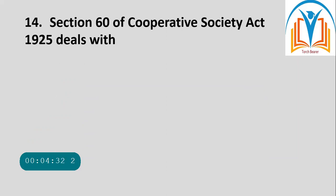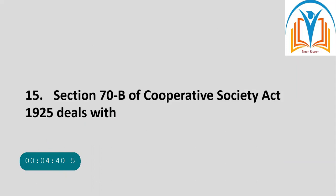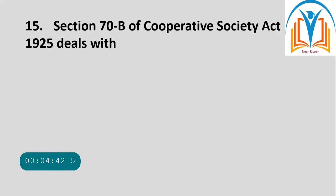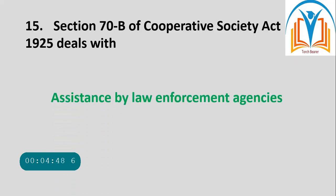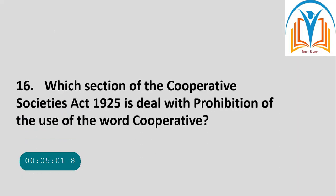Section 60 of the Cooperative Societies Act 1925 deals with offences. Section 70 of the Cooperative Societies Act 1925 deals with assistance by law enforcement agencies.